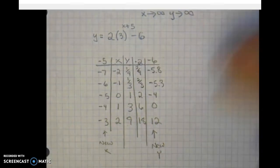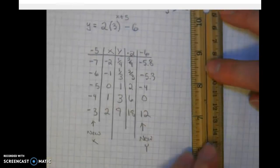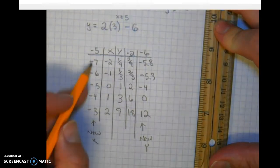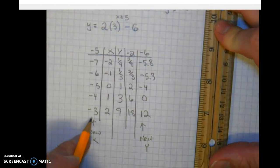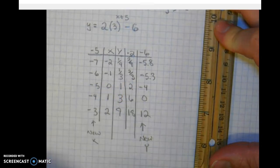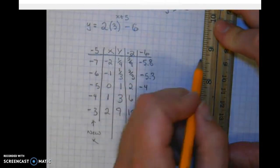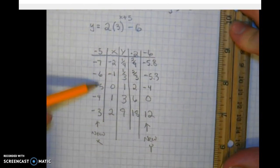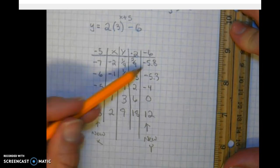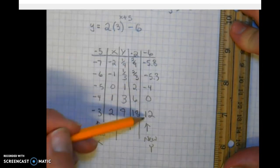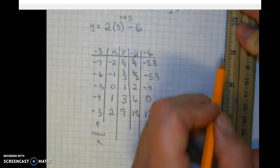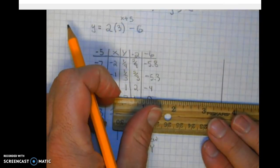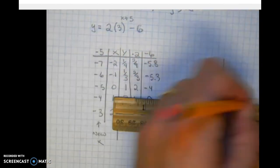Let's make ourselves a graph. Now keep in mind when you're making your graph, what your x values are, and what your y values are. So that way you kind of know how to give yourself some little extra room on the left. And then we're going to be going down to about negative six and up to 12.